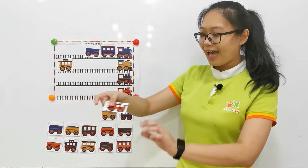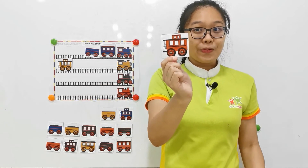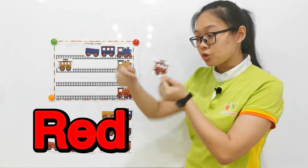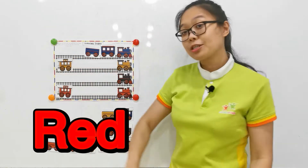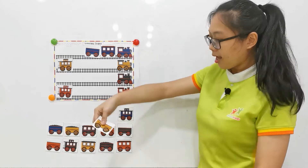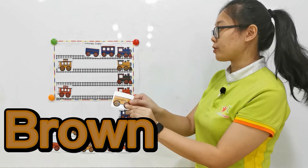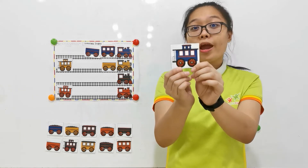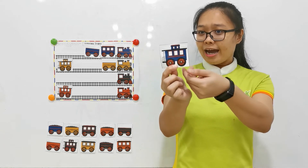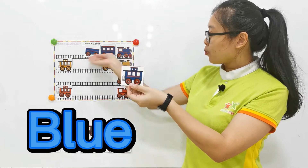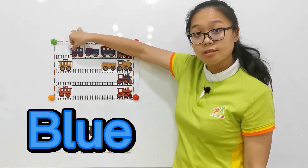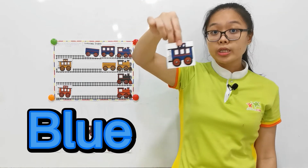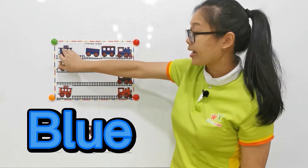The next one — just now teacher told you the cabin like this is called cables. So we need to put it at the end of the trend. This is the red color trend, so we're going to put it at the end of the red color trend. The last one — this is brown. We just put it at the end of the brown color trend. The last one — this is brown, so we should put it with the blue color trend. For the cables, we should put at the end of the trend. Good job.